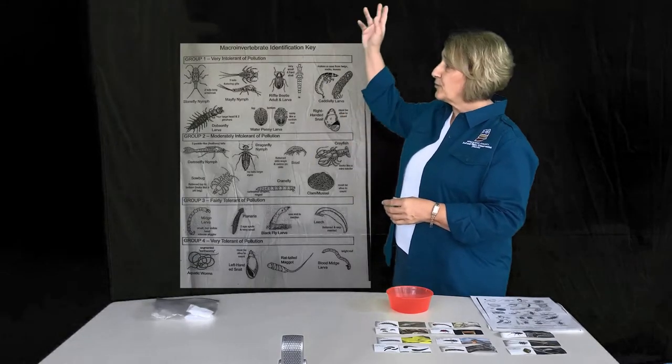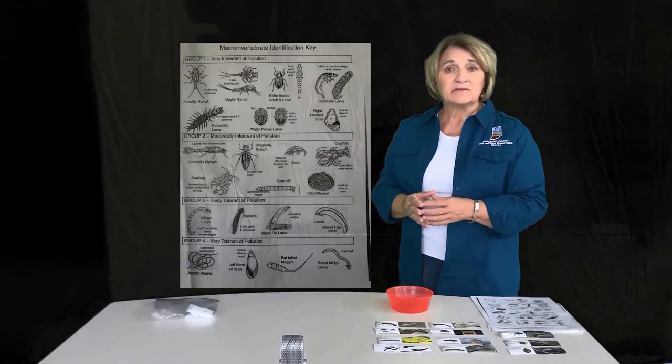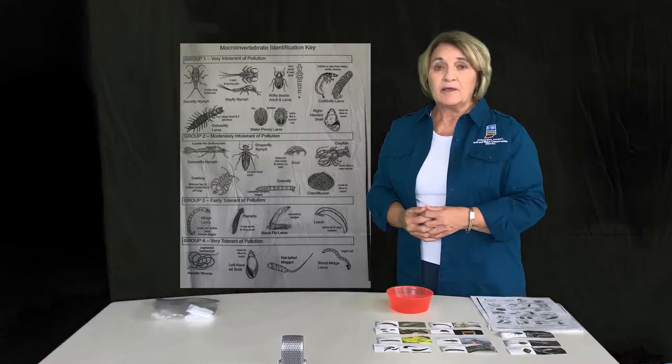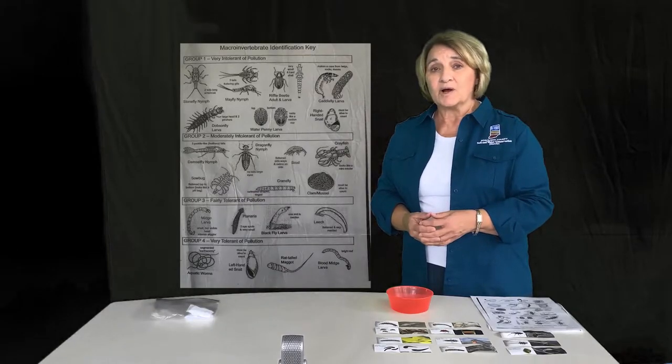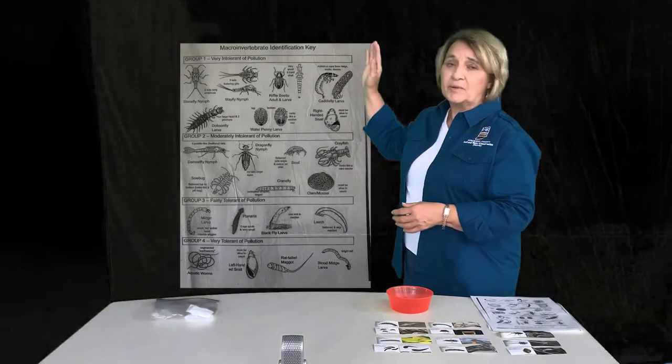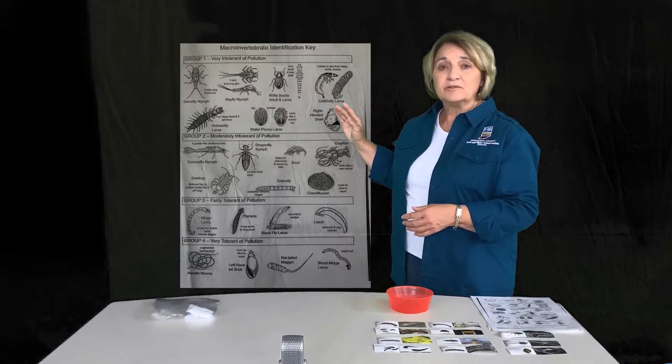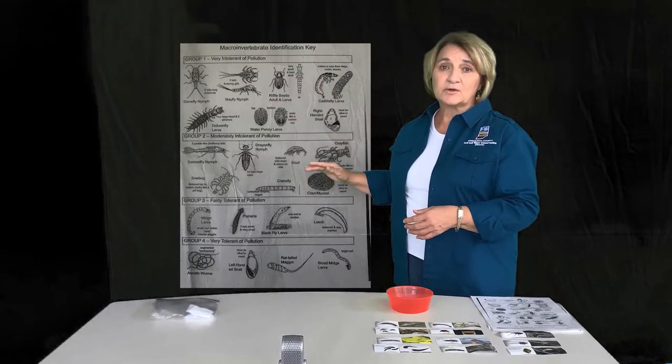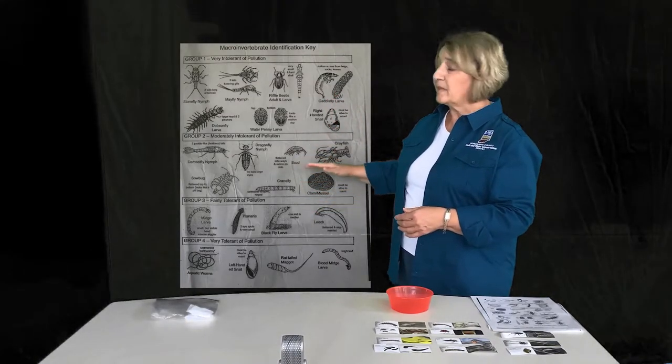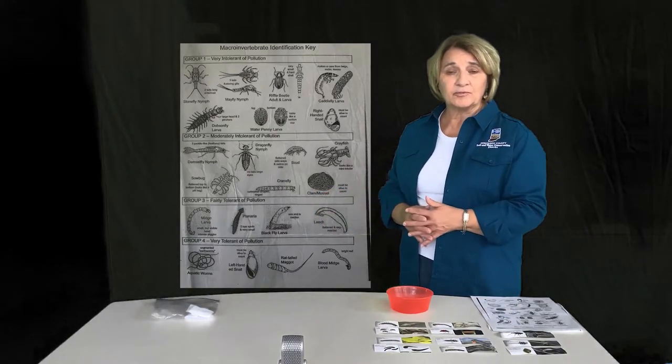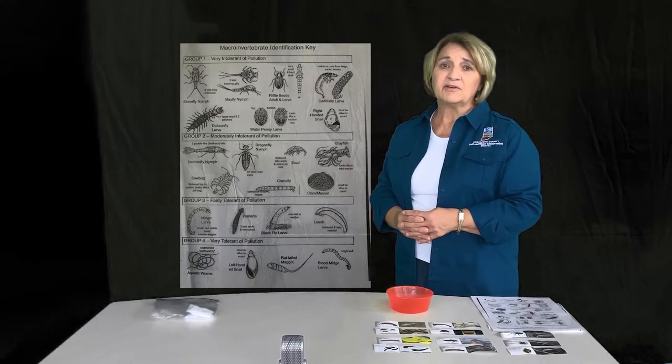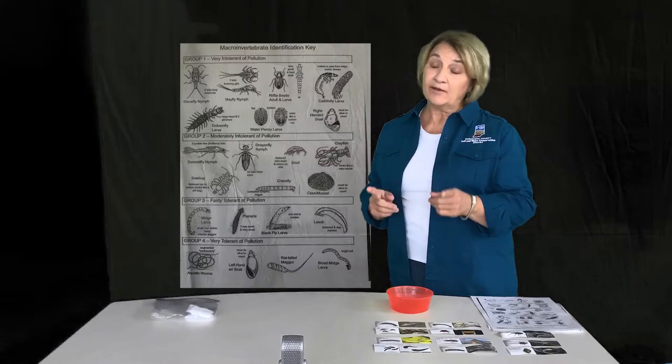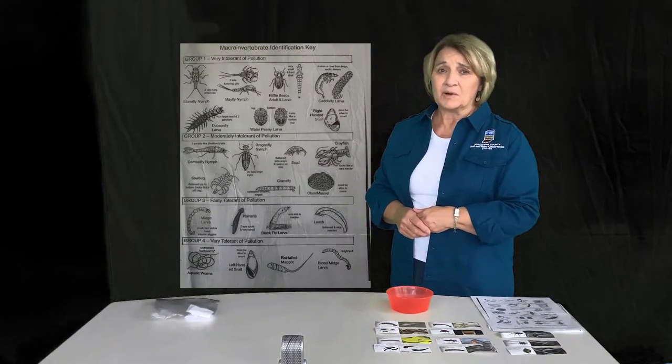So if we look at group 1, we notice that they are very intolerant to pollution. That means they have to have really clean water. As we move down the poster, each group can tolerate less quality water. So by the time we get down here to the bottom at group 4, they can live in really bad water if they have to. They're also happy to live in clean water.